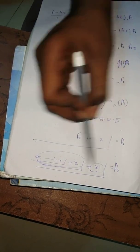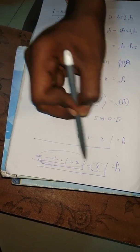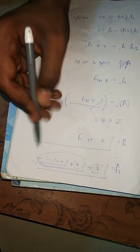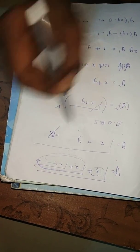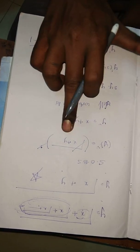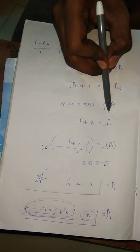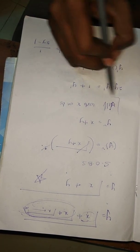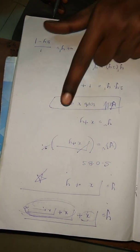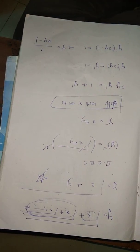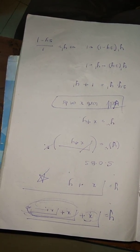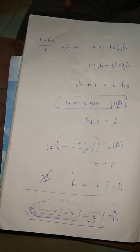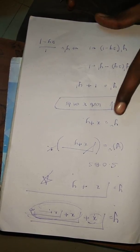The important step: since the radical repeats infinitely, y = √(x + y). Squaring both sides: y² = x + y.